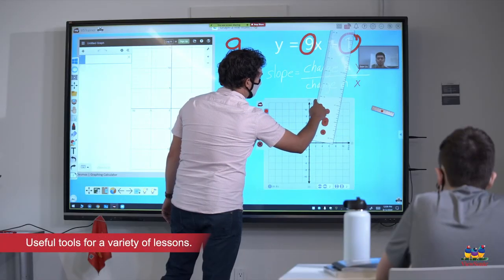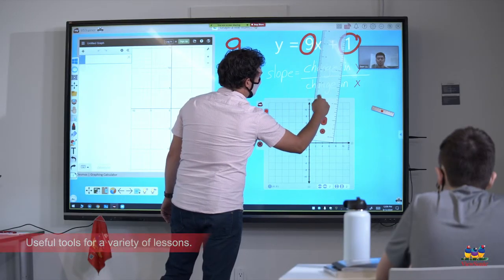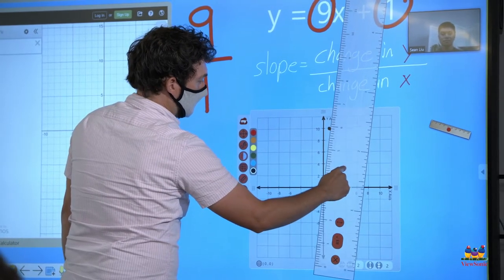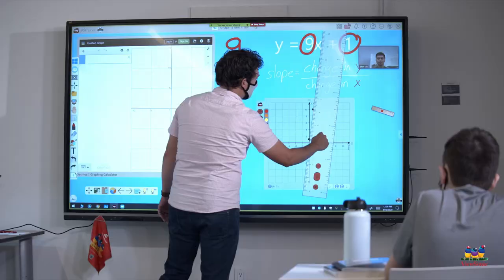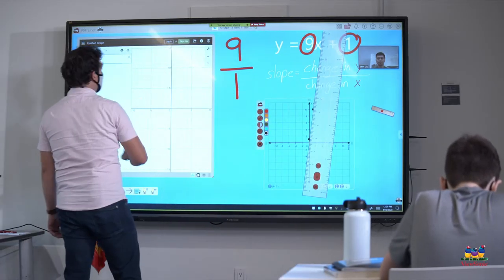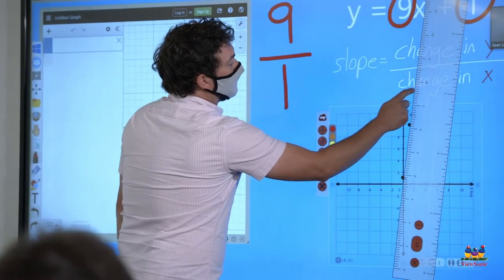Myviewboard has a lot of great tools, no matter what content I teach. Here I'm using a ruler, coordinate graph, and I have a graphing website embedded on the left. Notice that I'm not juggling around switching tabs and programs. So now I'm going to grab my line.